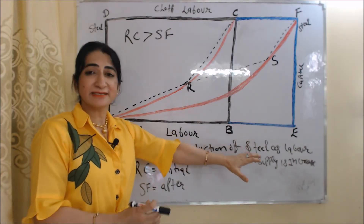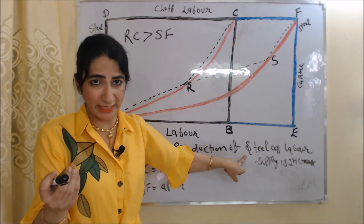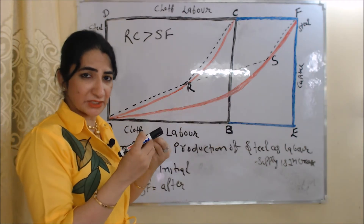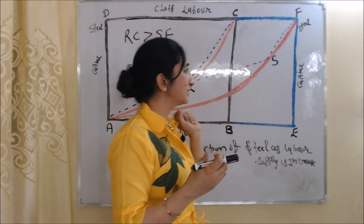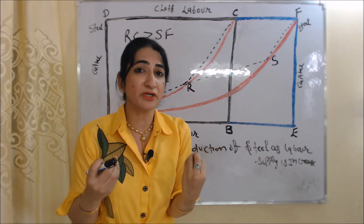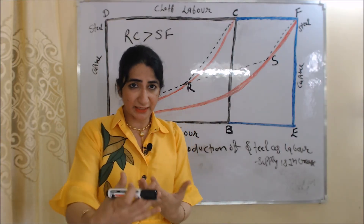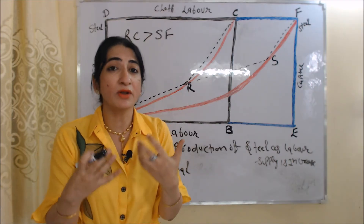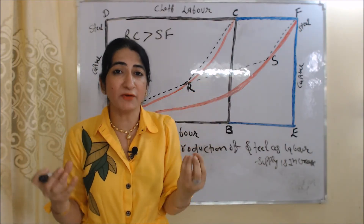Now we will see the impact on production of steel as labor supply increases. Steel is a capital-intensive good — in production of steel we require more capital — and supply of capital is constant. Initially the capital-labor ratio of steel is RC, and when labor supply increases the capital-labor ratio of steel is SF. The SF line is smaller than the RC line, which shows that as labor supply increases, production of steel reduces. This is because all producers shift their efforts and resources to production of cloth, which is labor-intensive, while reducing production of steel since steel is capital-intensive and capital supply is constant.